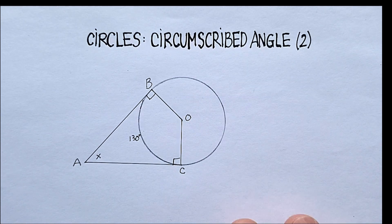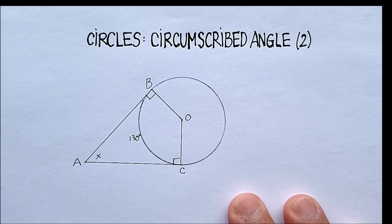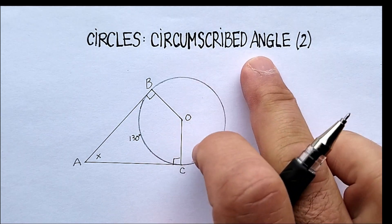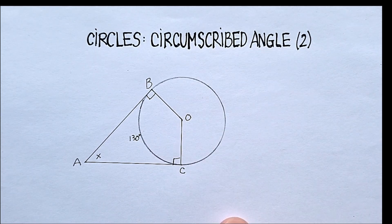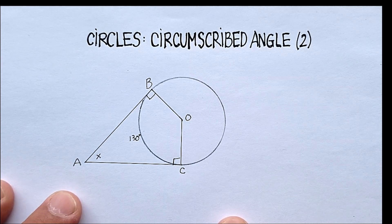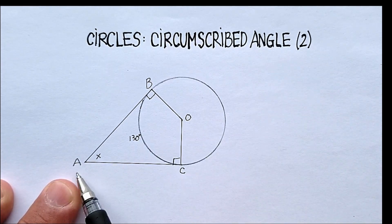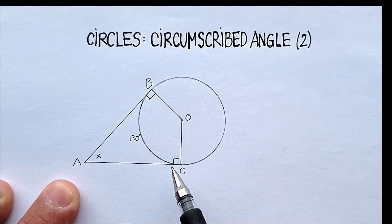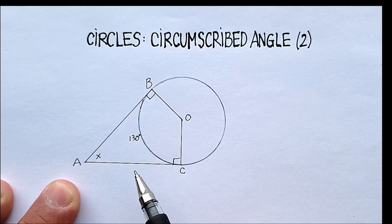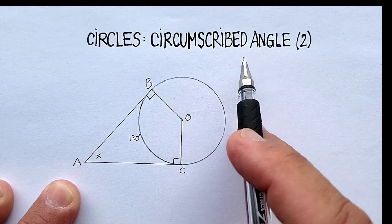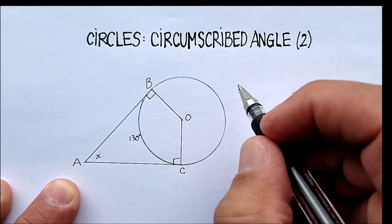Okay, in this video I'm going to go over another property that circumscribed angles have that I didn't cover in a previous video. Remember that a circumscribed angle has the vertex outside of the circle. So remember that's very important. Circumscribed angle, vertex outside the circle.